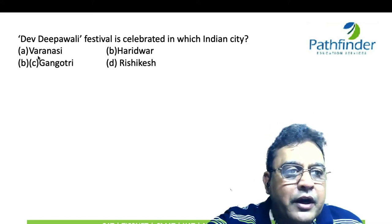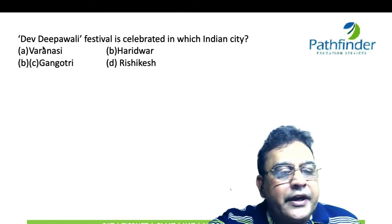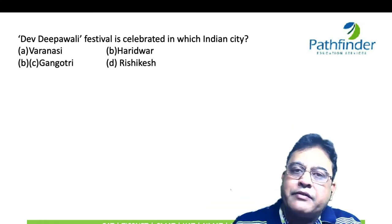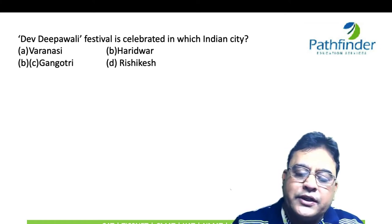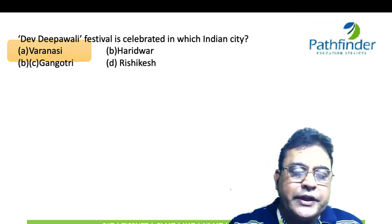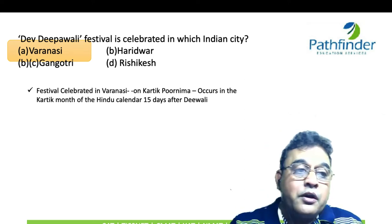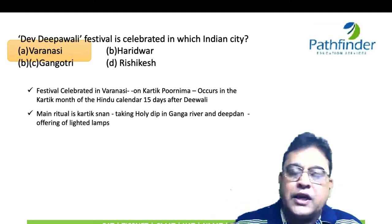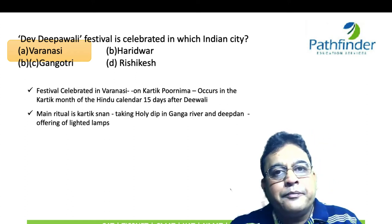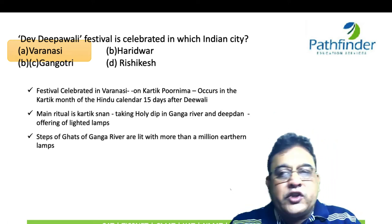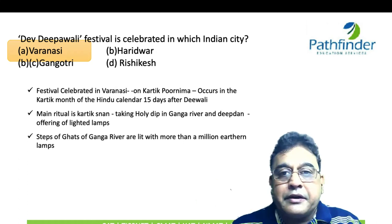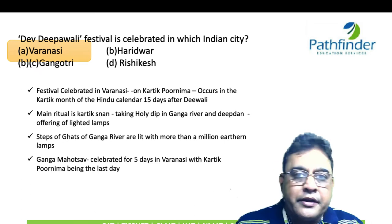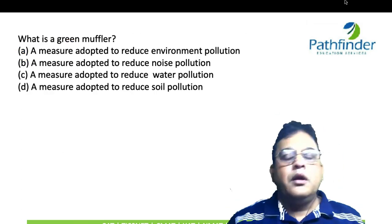Next question: Dev Deepawali festival is celebrated in which Indian city? Options are Varanasi, Haridwar, Gangotri, and Rishikesh. The correct answer is Varanasi. As the name suggests, it is celebrated around Diwali — specifically 15 days after Diwali, on Kartik Purnima in the Kartik month of the Hindu calendar. The main ritual is Kartik Snaan — a holy dip in the Ganga — and Deepdan, the offering of earthen lamps. The steps of the Ghats are lit with more than a million earthen lamps. The Ganga Mahotsav is a five-day festival in Varanasi whose last day is Kartik Purnima.